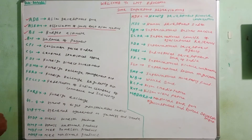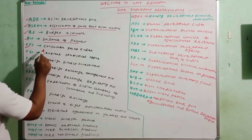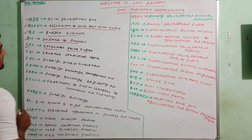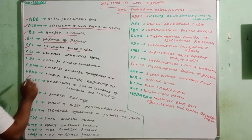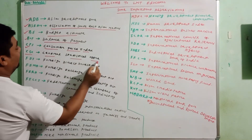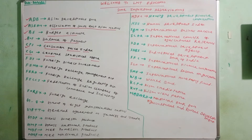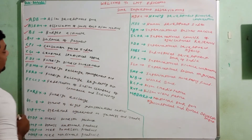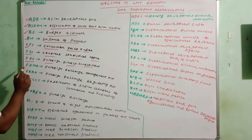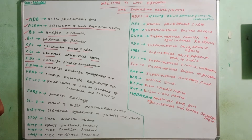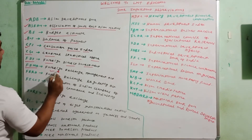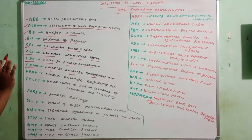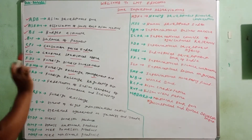BE means Budget Estimate. BOP means Balance of Payment. CPI means Consumer Price Index. CSO means Central Statistical Office. FDI means Foreign Direct Investment. FEMA means Foreign Exchange Management Act.